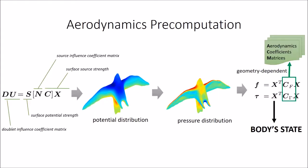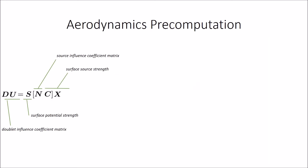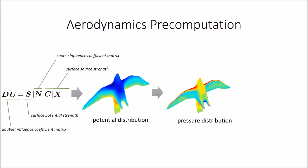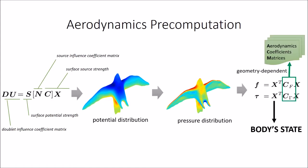In the aerodynamics pre-computation step, linear equations are constructed to obtain potential strength distribution and pressure distribution. The final aerodynamics loads are in the quadratic form related to both body state and geometry.